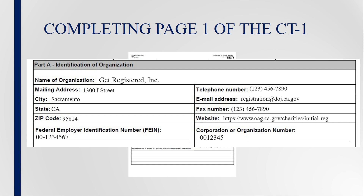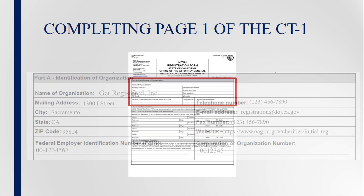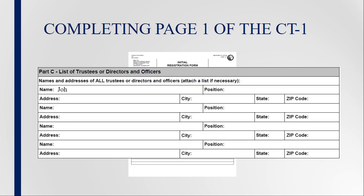Providing the correct FEIN and corporate or organization number on the form helps ensure accurate and prompt processing of your organization's registration application. In the next section, list all the current trustees, directors, and officers for the organization. If extra space is needed, attach a separate paper to list the remaining board members, officers, or trustees.